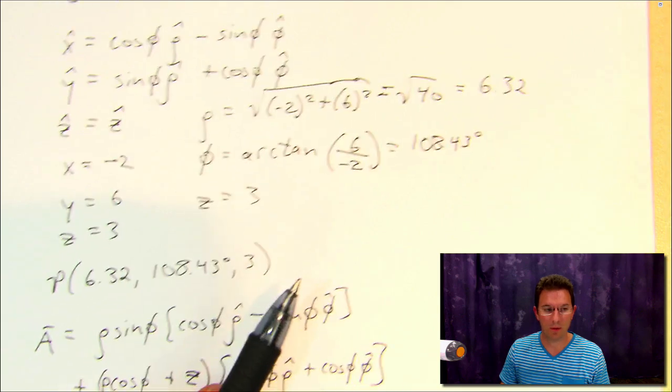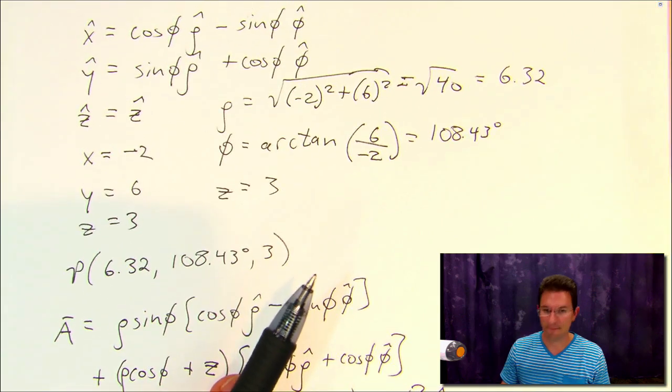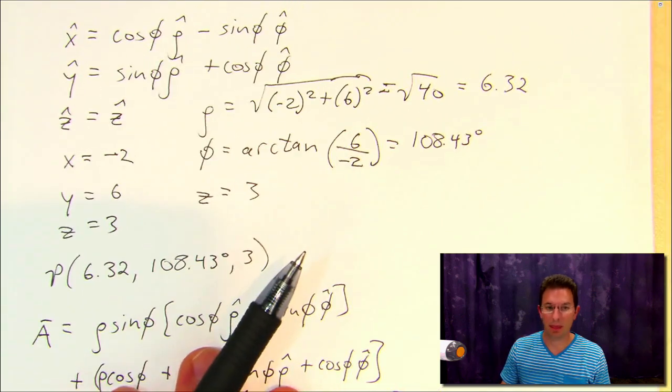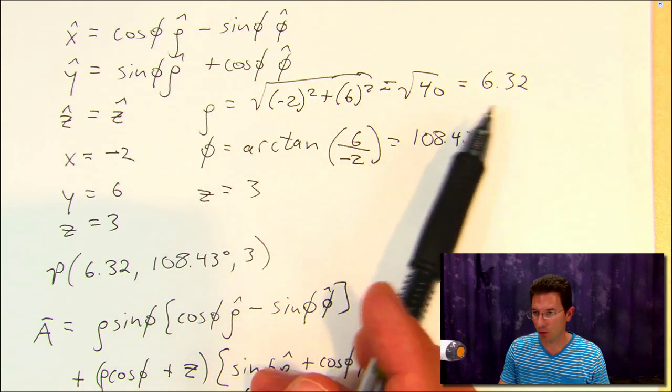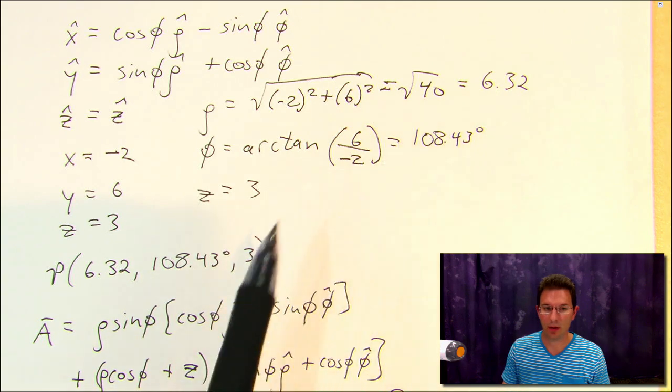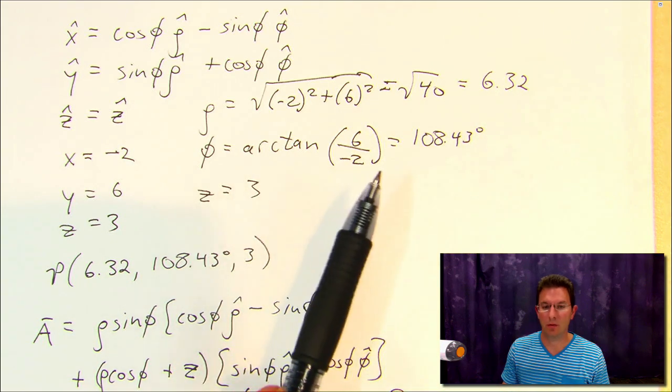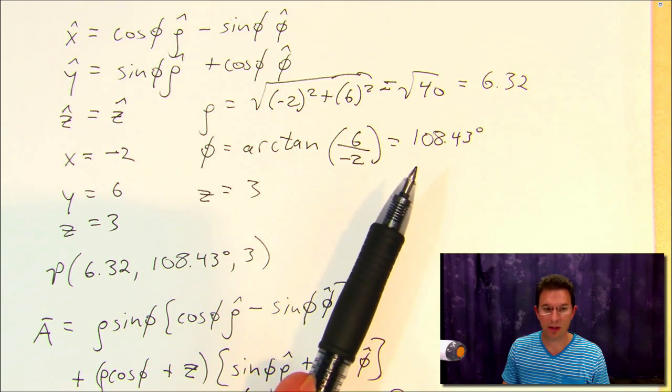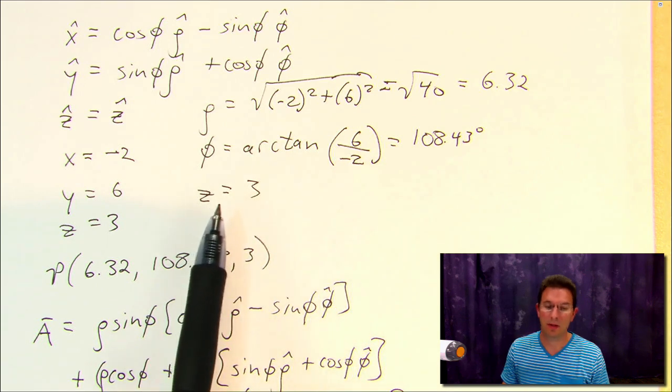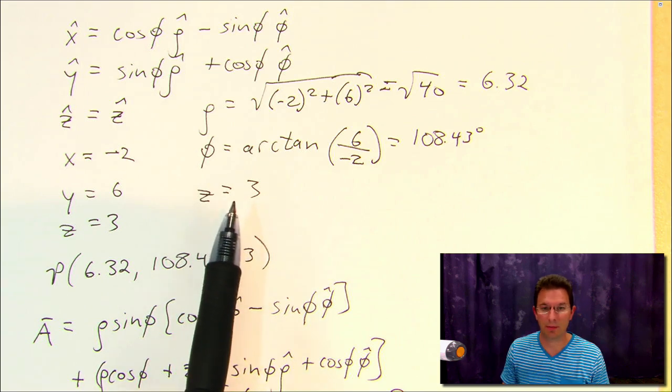So ρ is the square root of x squared plus y squared. That's the square root of 40, which is 6.32. φ is the arctangent of y over x, which is 108.43 degrees, and z is just simply equal to z, which is 3. No problems there.